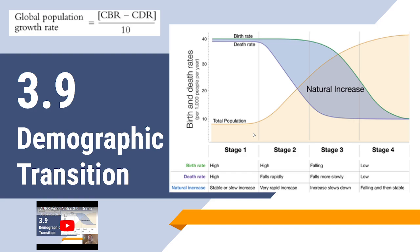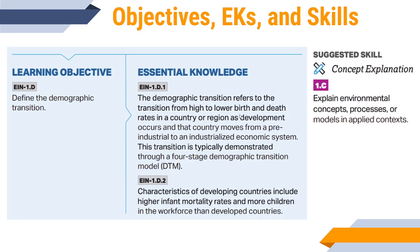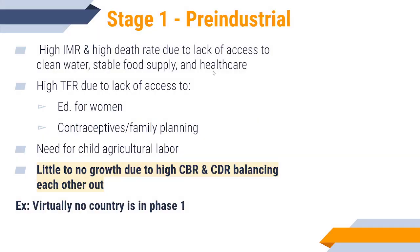Our final topic is demographic transition. In demographic transition, we look at the predictable pattern of population growth over time and changes. Each stage has a very specific outcome for birth rates, death rates, and natural increase — basically what happens when you put those two things together. Demographic transition has four stages in AP Environmental Science. There are other outlets that discuss a fifth stage, but we only talk about four.